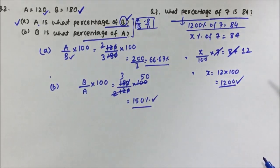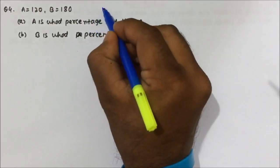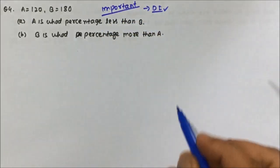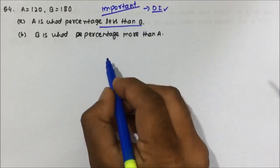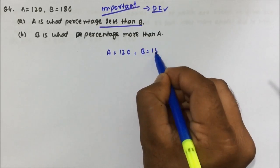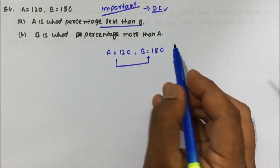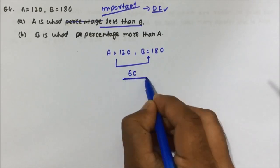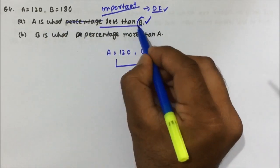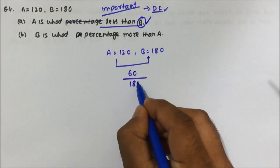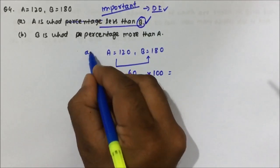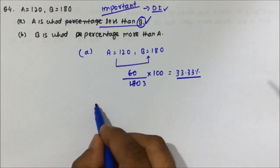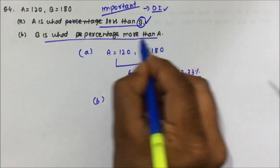Question 4 is very important and comes up in data interpretation. A is 120 and B is 180. A is what percentage less than B? First forget the percentage — A is 60 less than B. Now A is being compared with B, so B goes down: (60 / 180) × 100 = 33.33%. So A is 33.33 percent less than B.